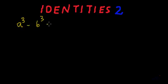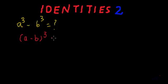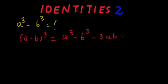Hi, in this video we will learn the derivation of the identity a cube minus b cube. So now let's write the formula of a minus b whole cube. The formula for a minus b whole cube is a cube minus b cube minus 3ab multiplied by a minus b.